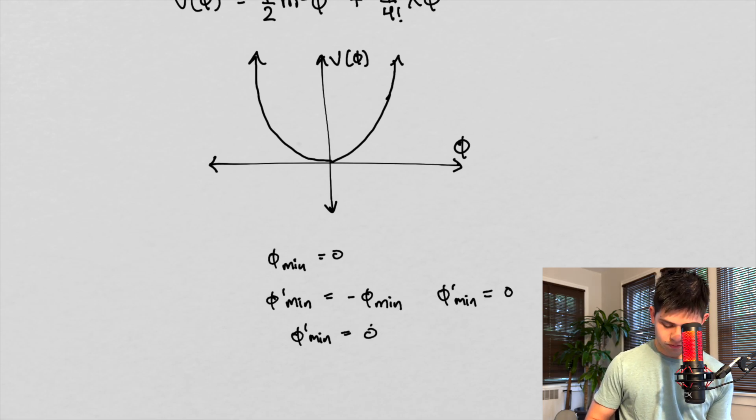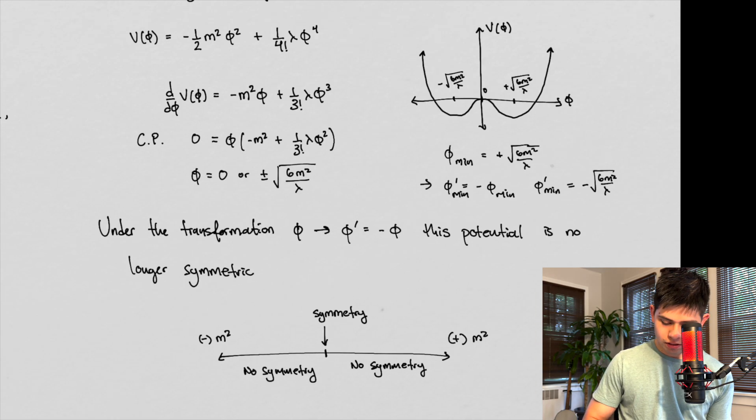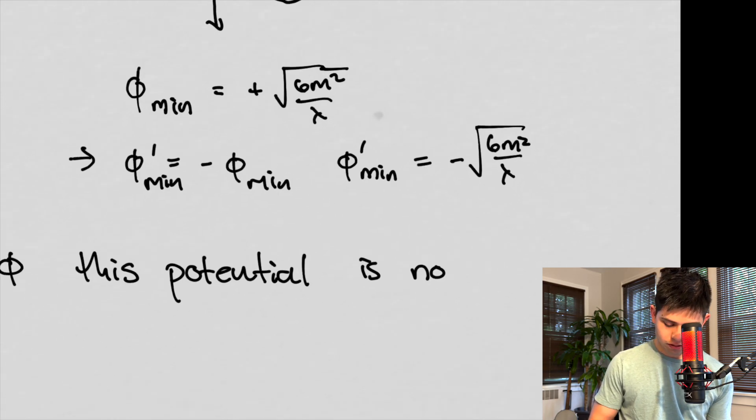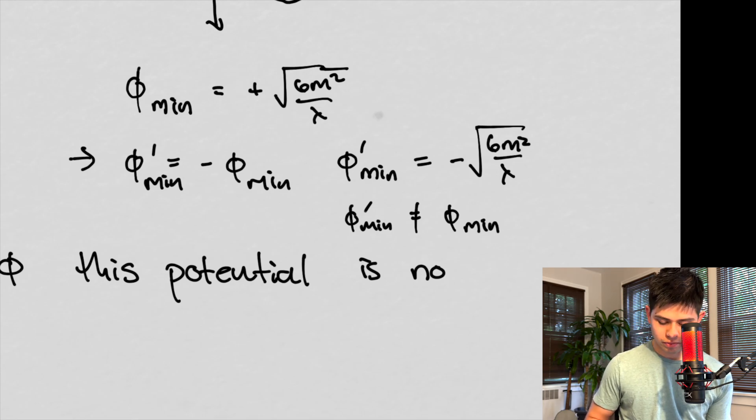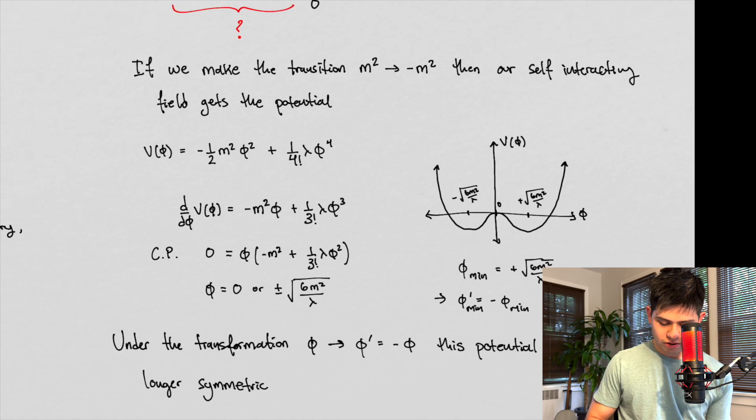What I mean to say is phi min is equal to, and this is a symmetry. That's a symmetry right here. Because those are the same. However, in this case here, phi min, phi new min is not equal to phi min, right? Because this is the negative of this right here.